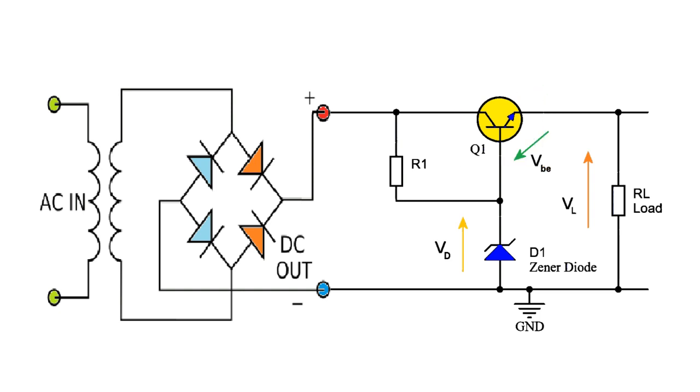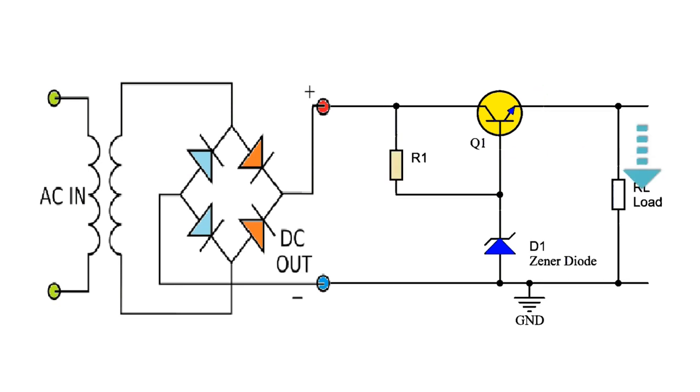There are two interesting modes. If the output voltage decreases, the base and emitter voltage increases, causing transistor Q1 to conduct more current. Therefore, the output voltage also increases. As a result, the output voltage remains at a constant level.